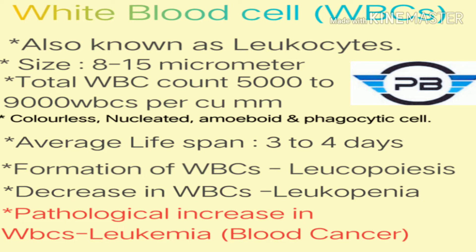White blood cells are also known as leucocytes. The normal size of leucocytes is 8 to 15 micrometers, and the total WBC count is 5,000 to 9,000 WBCs per cubic micrometer. White blood cells are colorless, nucleated, amoeboid, and phagocytic cells.